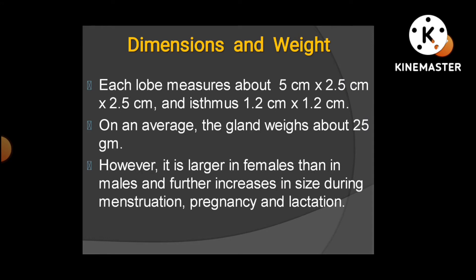Each lobe measures about 5 by 2.5 by 2.5 cm, and the isthmus is around 1.2 by 1.2 cm. On average, the weight of the gland is about 25 grams. However, it is larger in females than in males, and in females it increases in size during menstruation, pregnancy, and lactation — three physiological conditions in which the thyroid gland size temporarily increases.